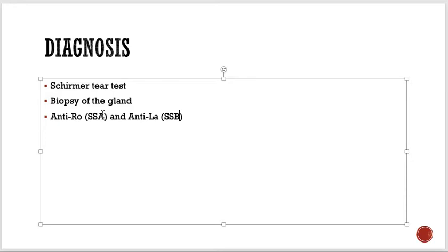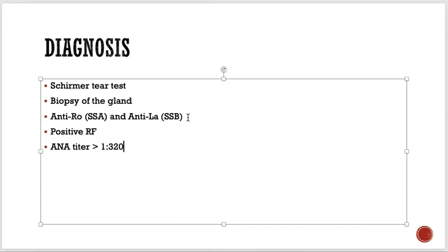Diagnostic criteria also include positive rheumatoid factor, or antinuclear antibody titer greater than 1:320. Biopsy of the salivary or lacrimal gland can be done, as well as the tear test. A classic triad of dry eyes, dry mouth, and arthritis of small joints helps in diagnosing cases.